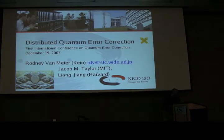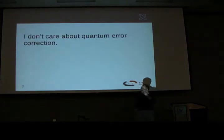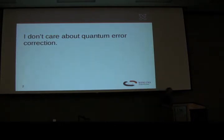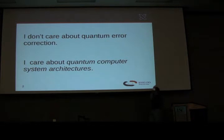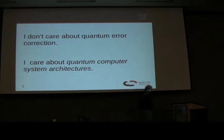I'm probably the only one who's actually dumb enough to get up here and tell you that I don't actually care about quantum error correction. I don't. My background is in computer systems. What I care about is building large-scale quantum computer system architectures. So that means we've got to have some error correction, because nobody's building perfect qubits yet — at least nobody that's come and talked to me.